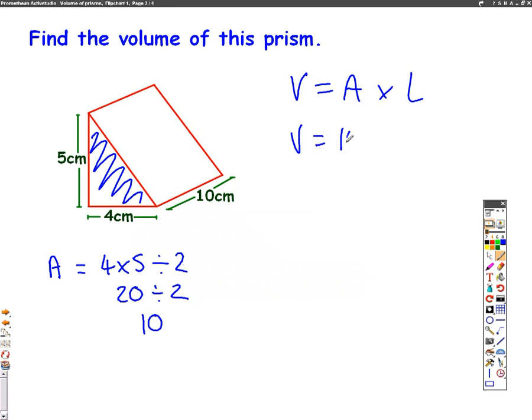So the volume equals 10 times how far back the shape goes. And you can see the shape goes 10 back. So it's 10 times 10, which will give us the answer of 100 centimetres cubed.